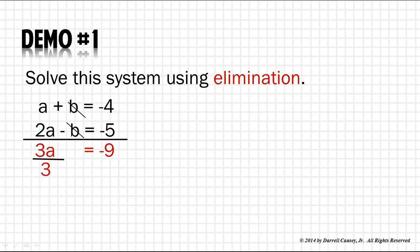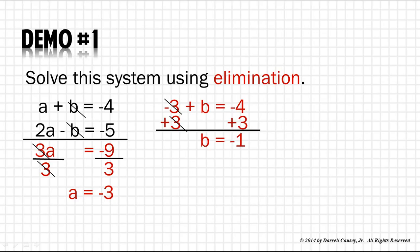Divide both sides by 3, and we get a equals negative 3. Now that we know what a is, we can substitute that into one of the other equations and solve for b. Negative 3 plus b, using the first equation, equals negative 4. Add 3 to both sides, and b equals negative 1. Our solution set is negative 3, negative 1. Now that was a pretty easy one. Let's do one a little bit more complicated.